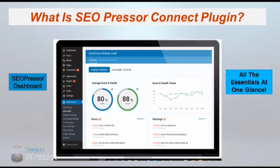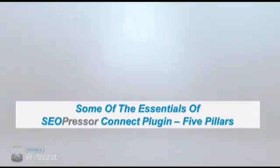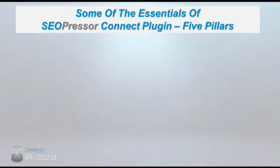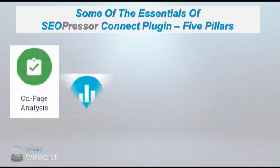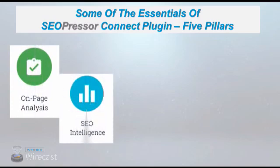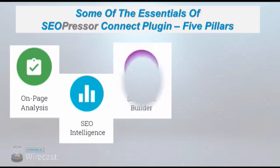You'll get all the essentials for great SEO at one glance. SEO Presser Connect Plugin is built around five pillars: first, on-page analysis; second, SEO intelligence; third, semantic builder; fourth, crawler control; and fifth, link management.